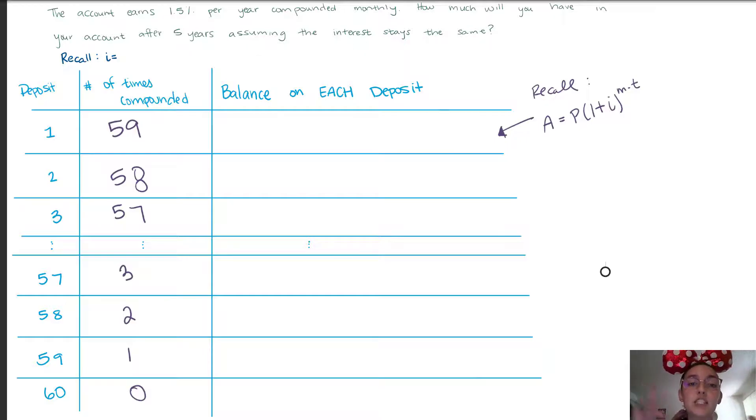Now from here we want to gain the balance on each of those deposits. So once we've made that deposit we can think of each deposit as its own entity, and at that point that deposit is being compounded. So we can use our compound interest rule to determine what our balance is going to be. For the first deposit our principal amount or our deposit was $100 and we can recall our interest rule. It's compounded 59 times, so this MT, this is the number of compounding periods, so the n, and that's what we have figured out in this column.